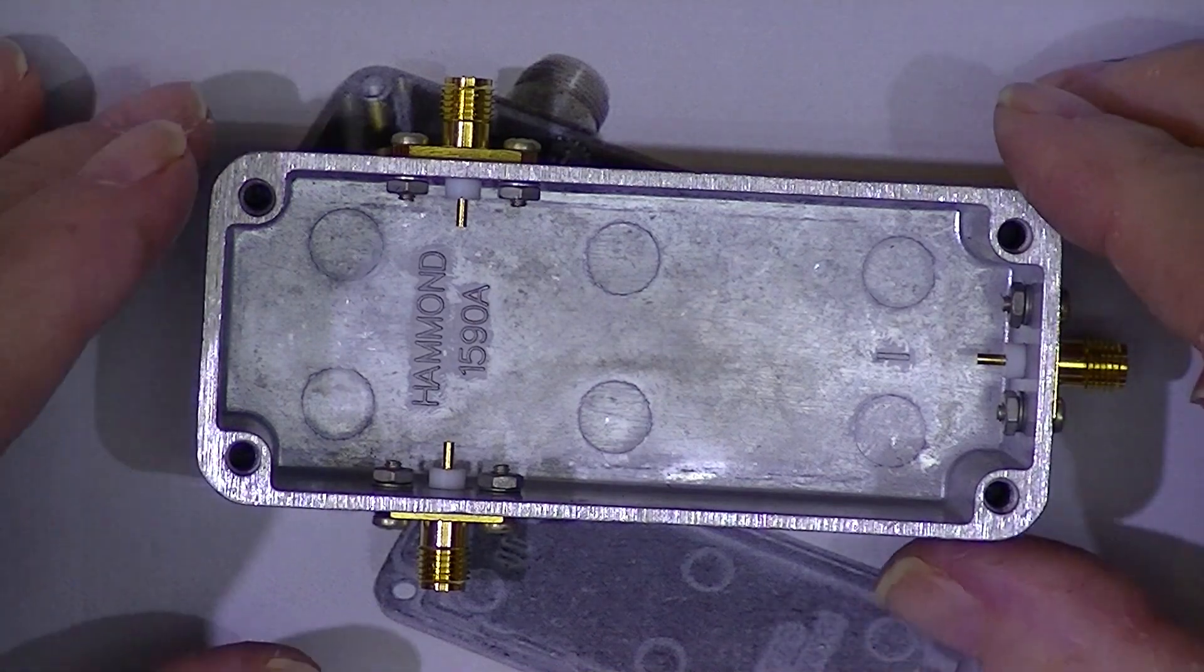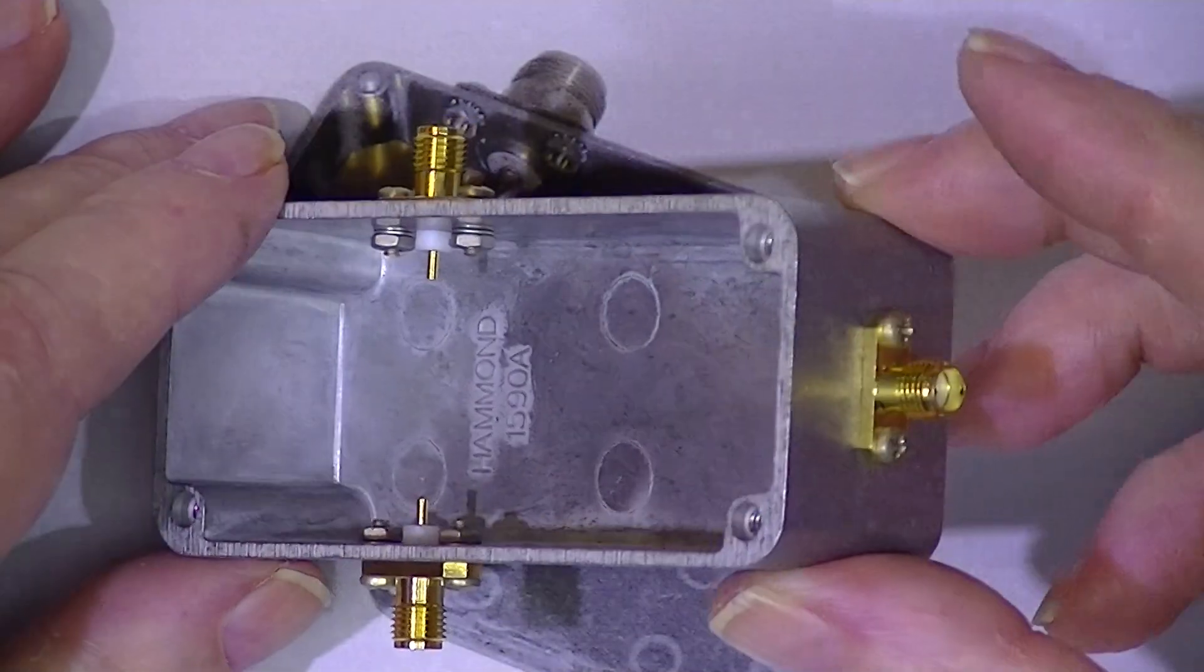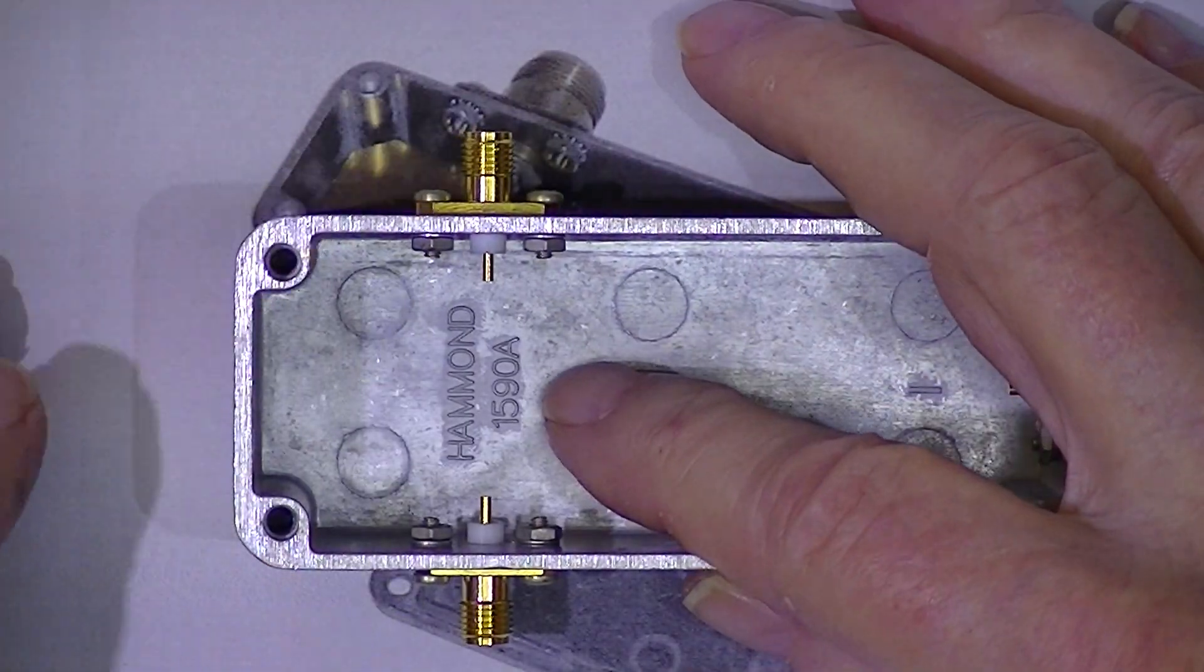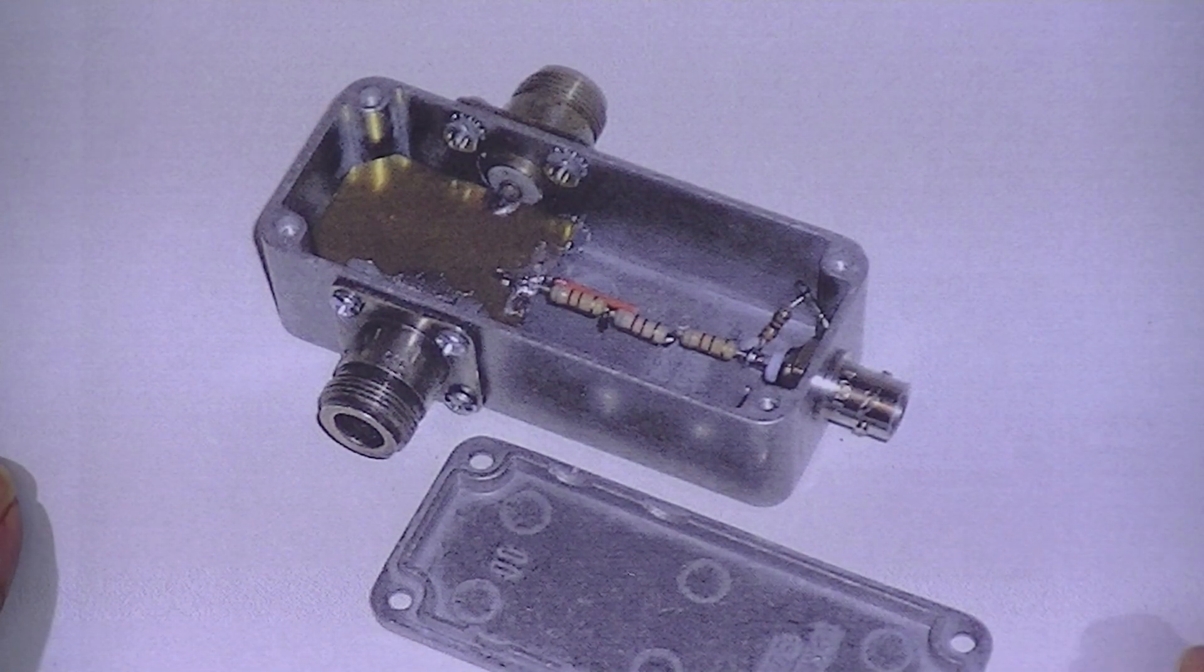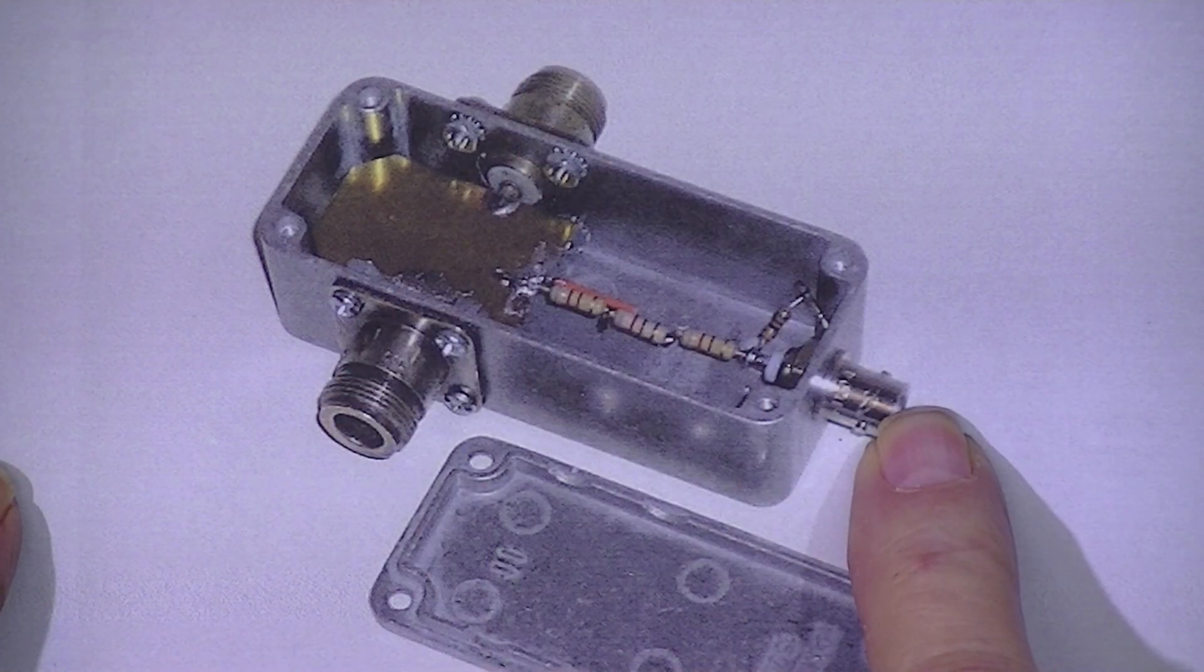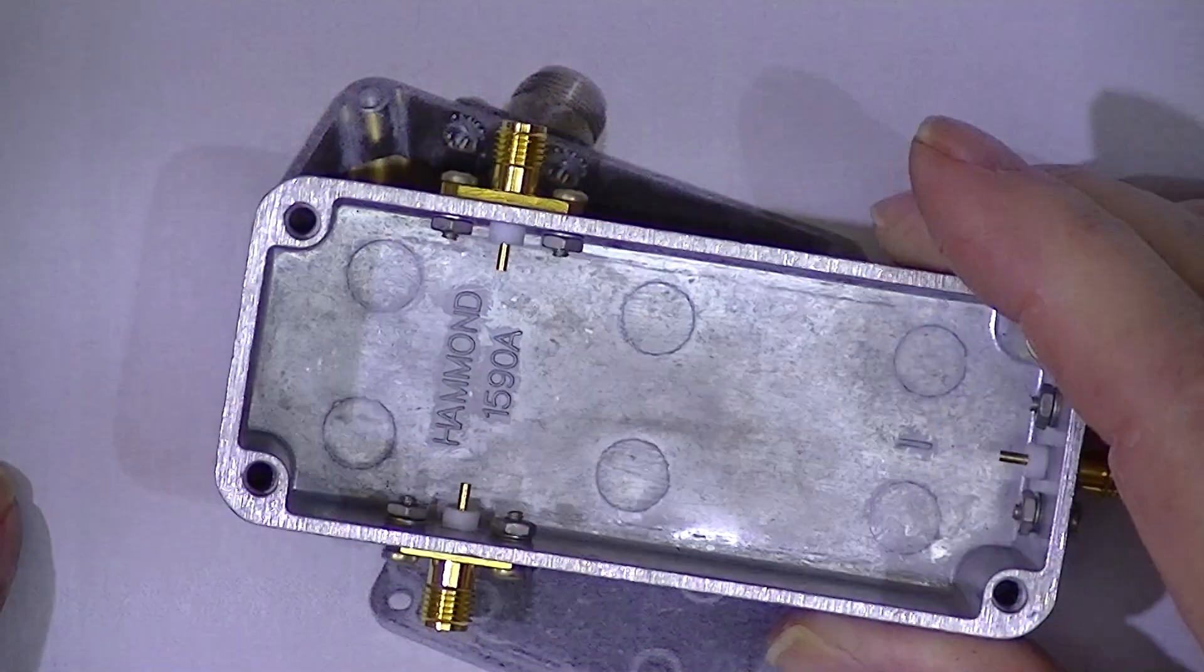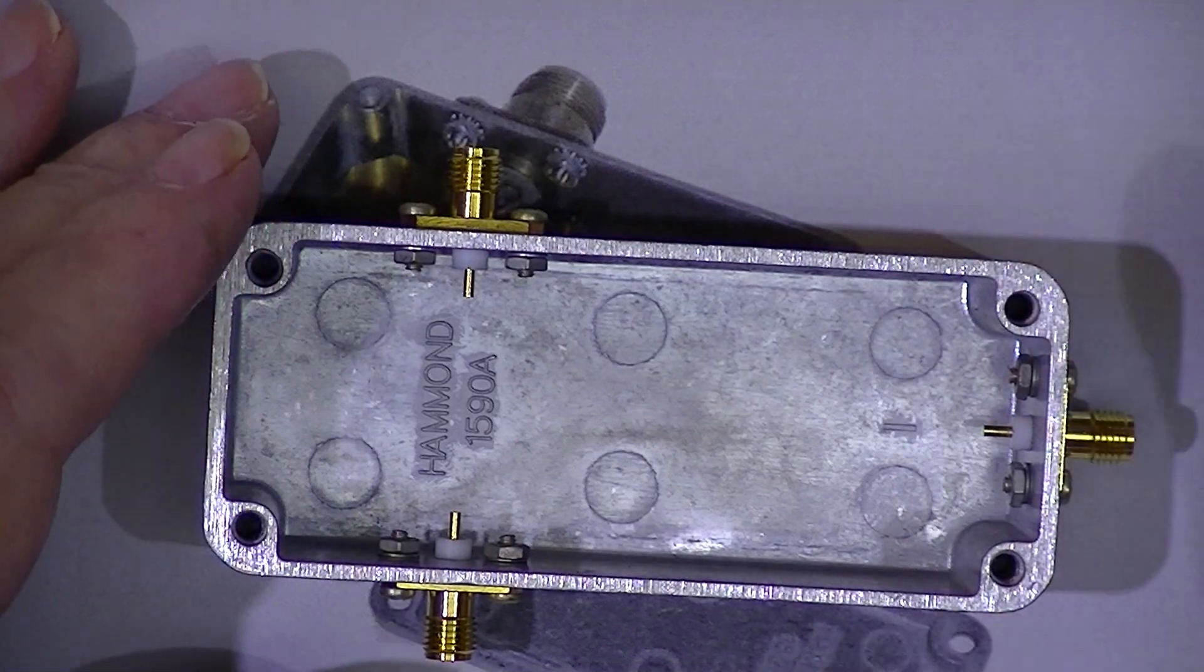This is a second part. I've drilled and mounted the SMA connectors on the Hammond 1590A. The original design employed N connectors and a BNC connector. Now let me say this about the design of this.